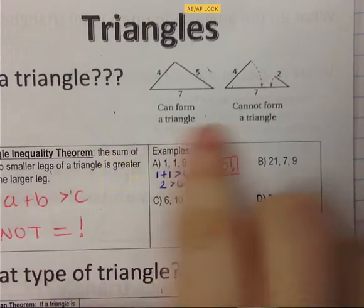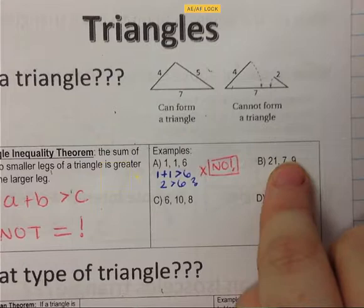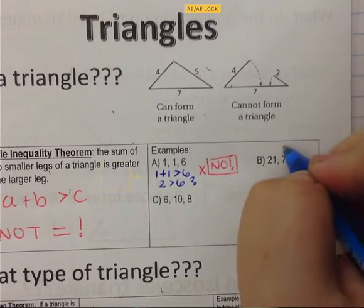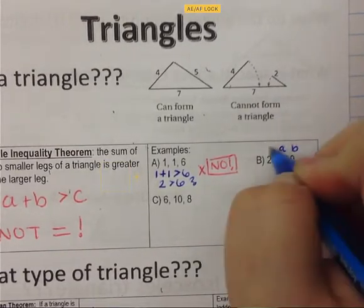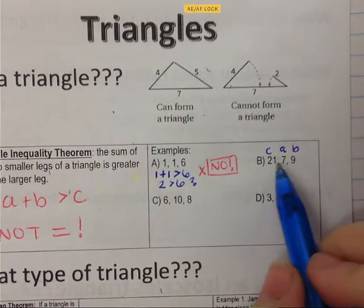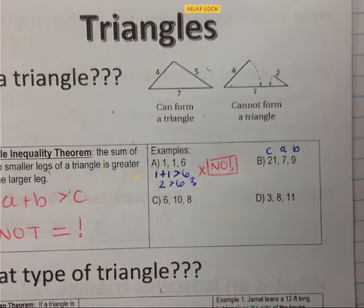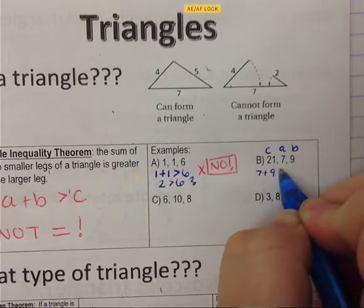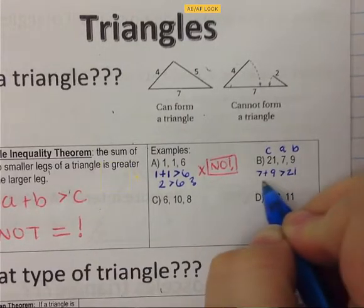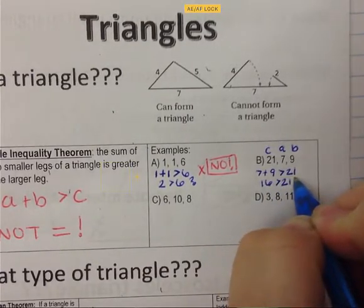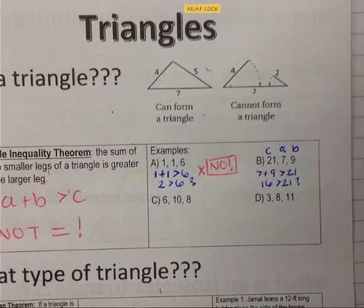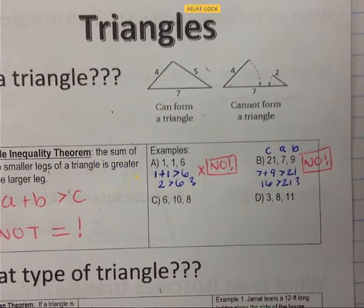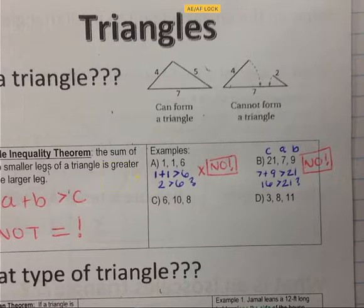Example B: notice the numbers are not in order, and that's okay — you just need to find your two smaller sides. The two smaller sides are 7 and 9, so A is 7, B is 9, and C is 21. So 7 plus 9 wants to be greater than 21. But 7 plus 9 is 16, and 16 is not greater than 21, so these three side lengths will not form a triangle.